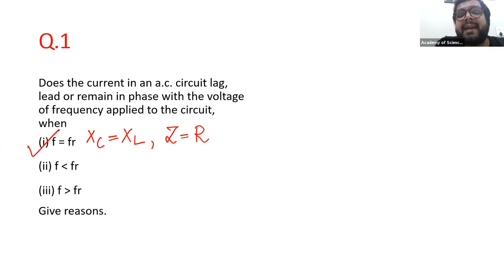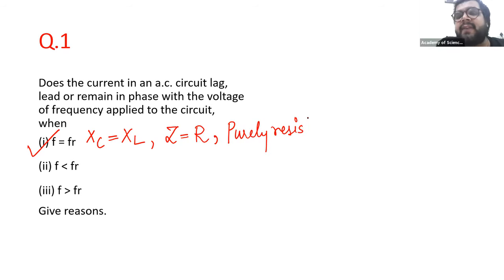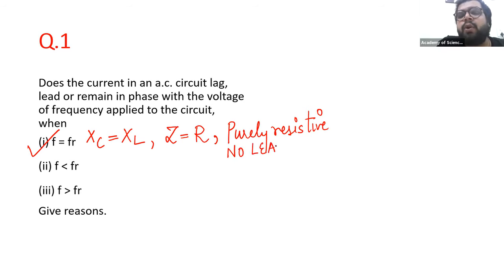So we can say that this circuit is purely resistive. This circuit is purely resistive and there is no lag, no lead. No lead, no lag.